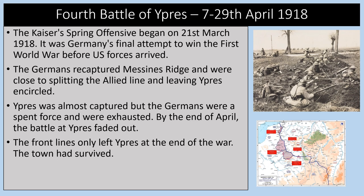The Fourth Battle of Ypres was from the 7th to the 29th of April 1918. The Kaiser Spring Offensive began on the 21st of March 1918 — Germany's final attempt to win the war before US forces arrived. The Germans captured Messines Ridge and were close to splitting the Allied line and encircling Ypres. Ypres was almost captured, but the Germans were a spent and exhausted force. By the end of April the battle had faded out, and the town survived.